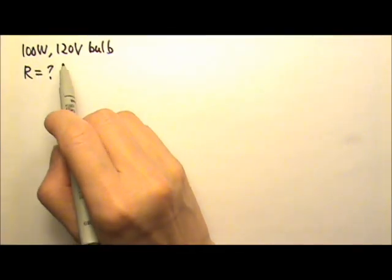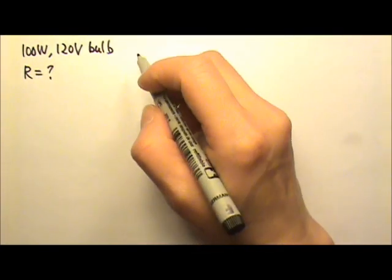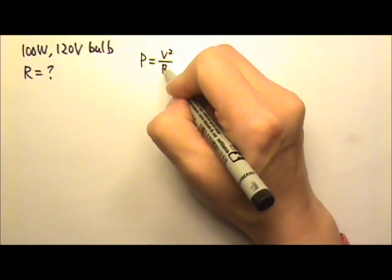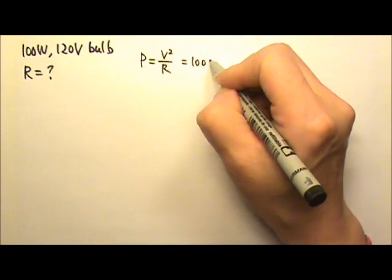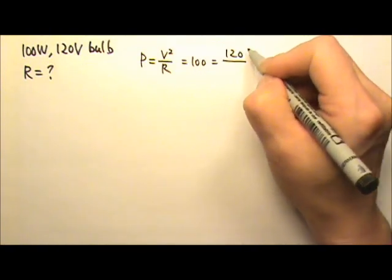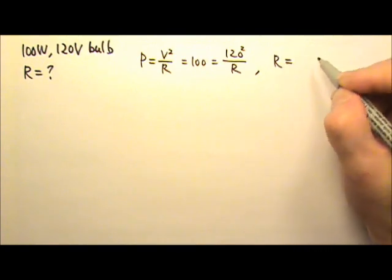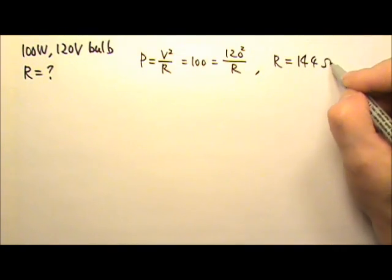We know the power, the voltage, and we are looking for the resistance. So we can use this equation: P equals V squared over R. The power is 100, the voltage is 120, and we have to square that and then divide it by R. Solving for R, we will get 144 ohms.